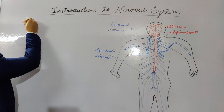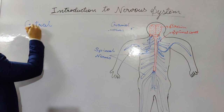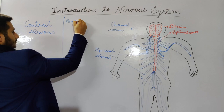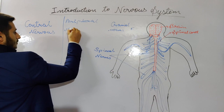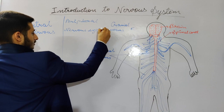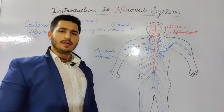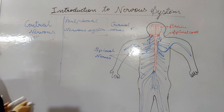The nervous system contains two parts based on function and structure: we have the central nervous system and the peripheral nervous system.